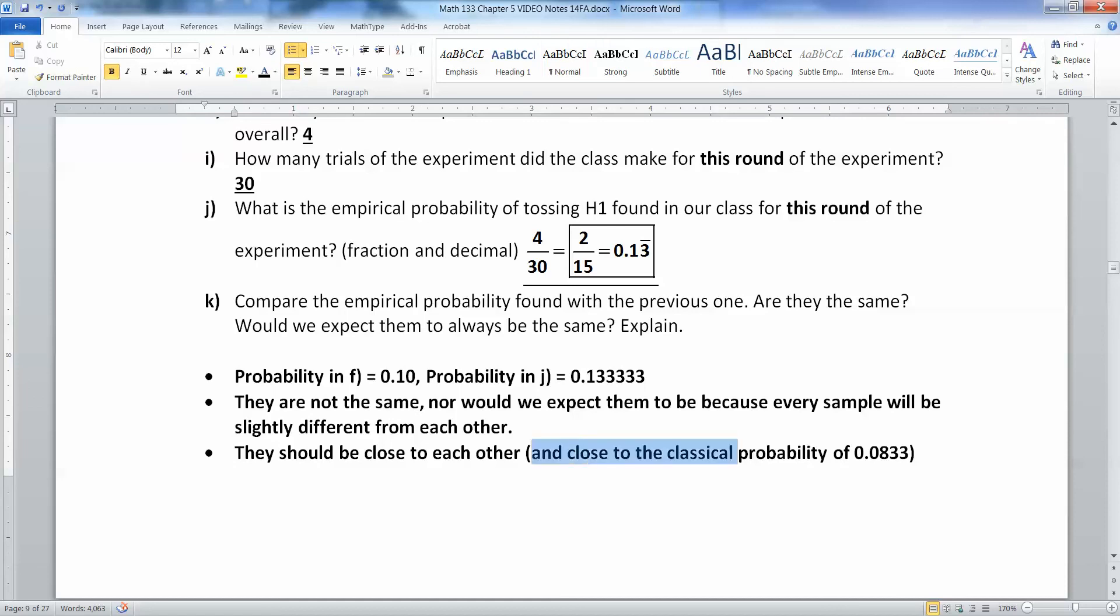They will be slightly different, but close. And they should always be close to the classical probability of 0.083. And both of these numbers are relatively close to 0.083. Not identical to it, but close.